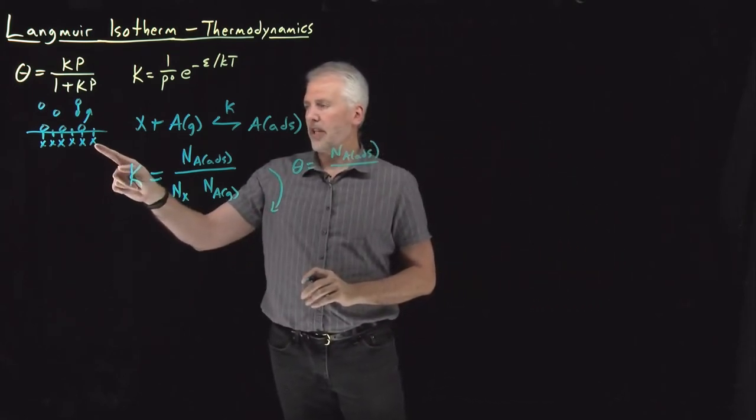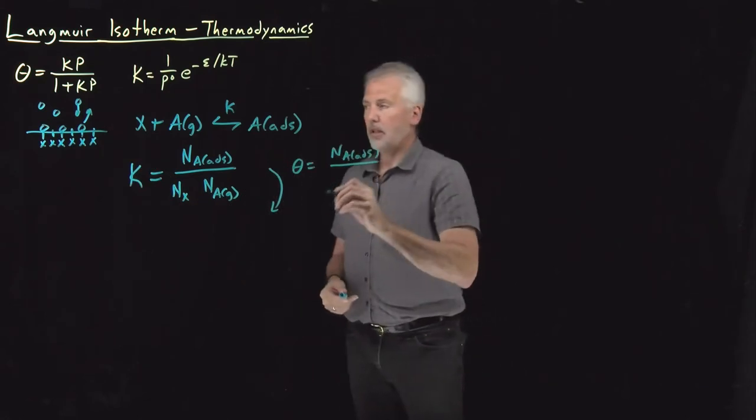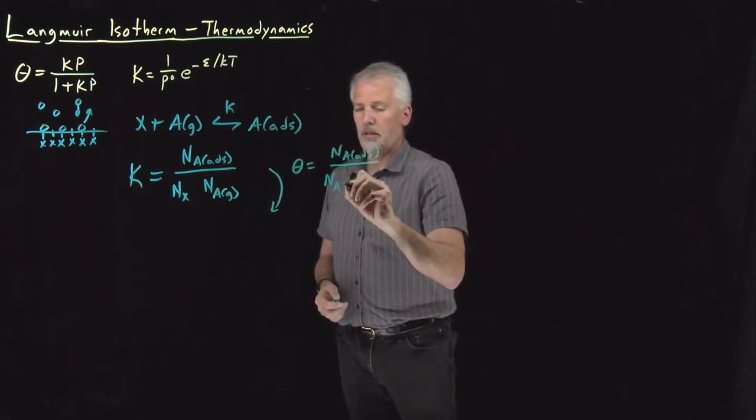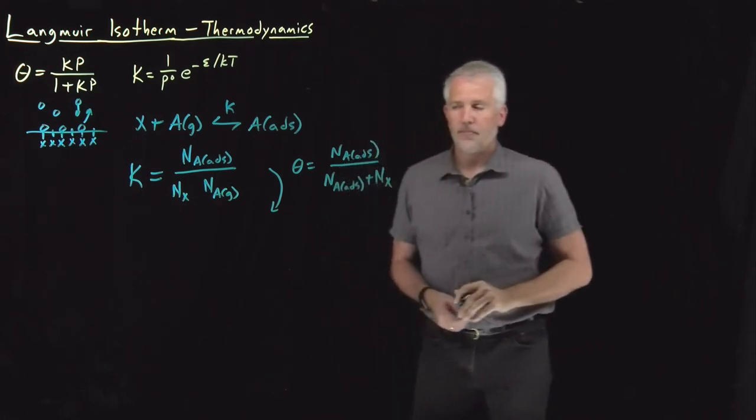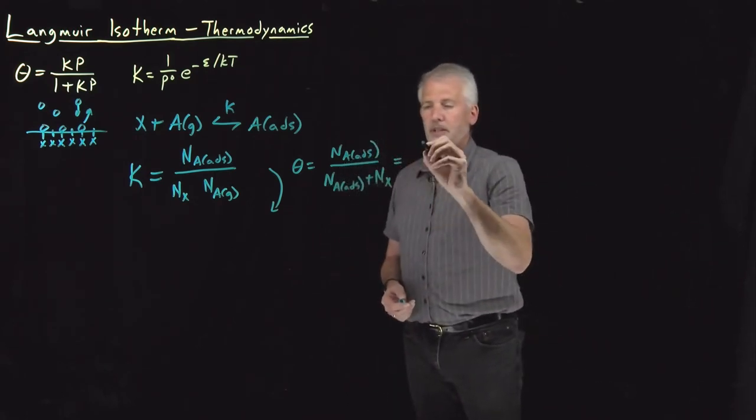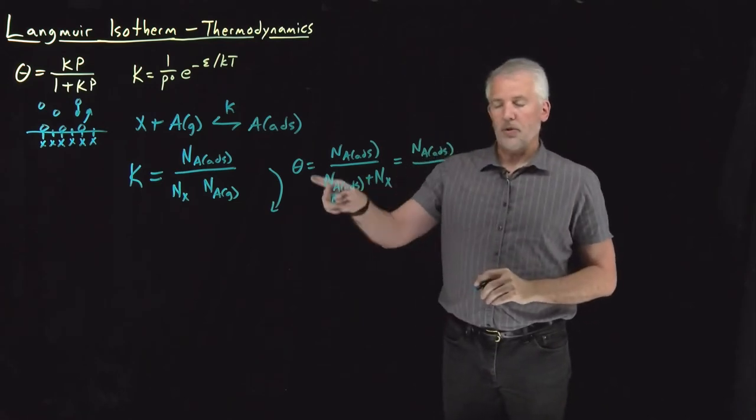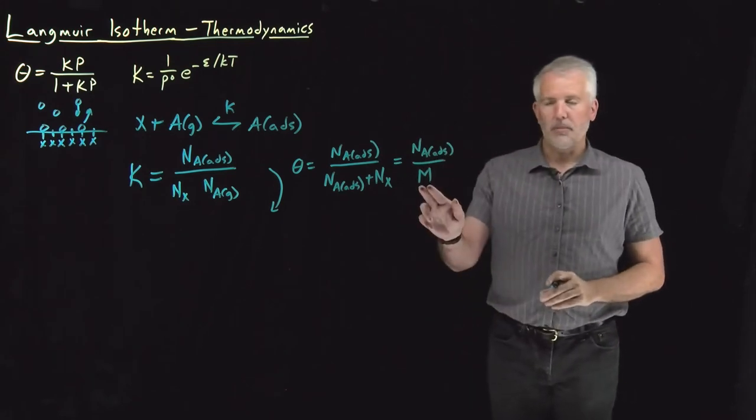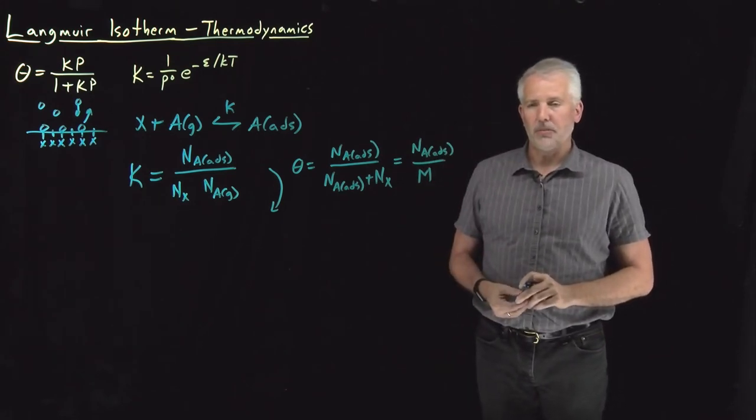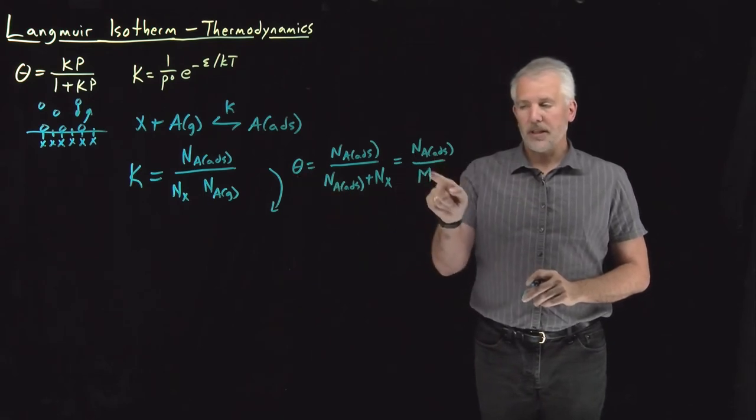I could think of the total number of sites as the number of empty sites plus the number of adsorbed sites if I want to, adsorbed plus empty, or probably easier just to say it's the total number of adsorbed sites divided by n total, the total number of sites on the surface, or we've actually used the variable m to talk about the total number of sites onto which molecules can adsorb. So theta, surface coverage, is the adsorbed sites divided by the total.